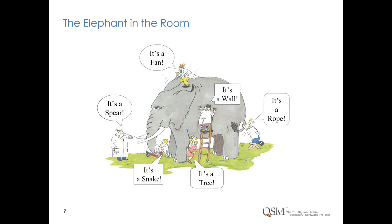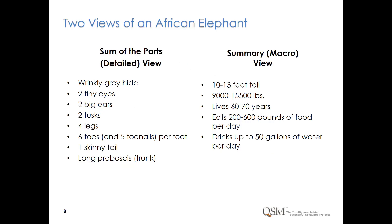Viewing the elephant from multiple angles provides a more complete picture. Software metrics should support their intended use, whether you are estimating a new project or benchmarking a completed one. How you describe an elephant depends on what someone needs to know — a detailed versus summary level view. Both are accurate and both are useful. If you're building an elephant house, the summary view is more useful and practical. What you need to know depends on why you need the information.